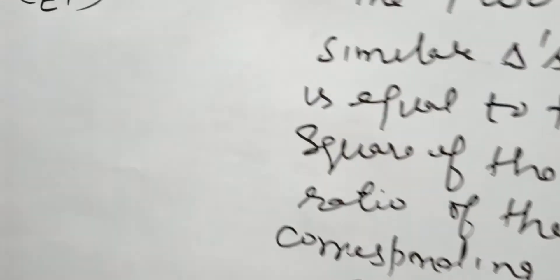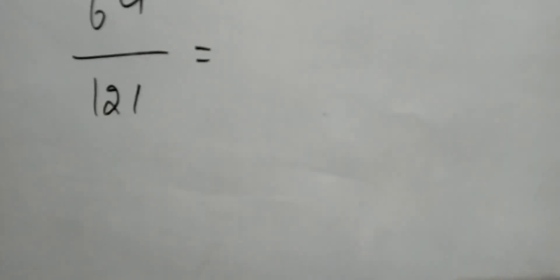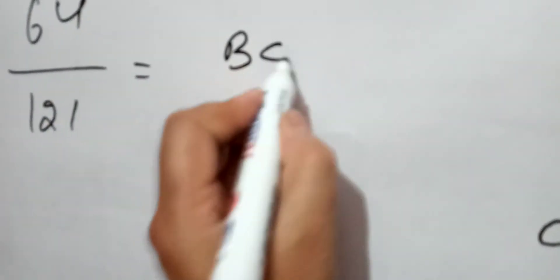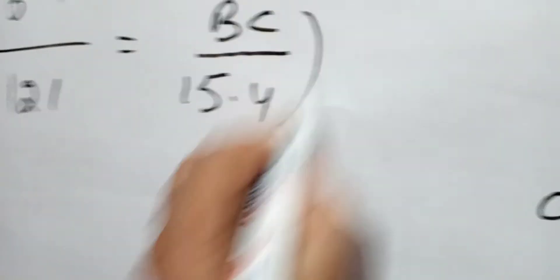This is theorem 6.4. Now we are given the area of triangle ABC is 64 cm² and DEF is 121 cm². We have to find BC, and EF is given as 15.4.